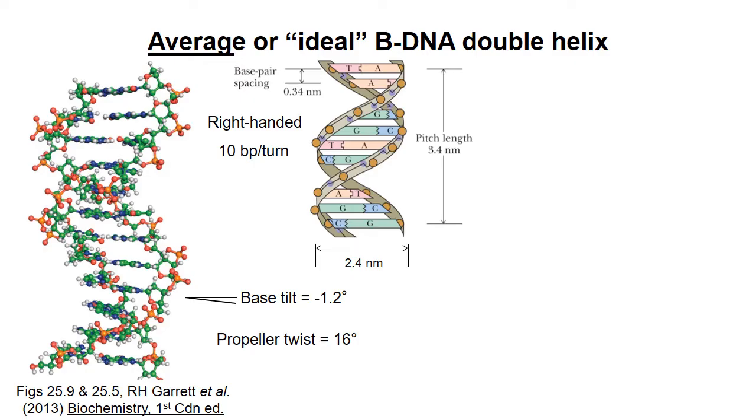The bases are not exactly perpendicular to the helical axis but have a slight tilt, 1.2 degrees on average, and there's an average propeller twist of 16 degrees. I'll describe what this means in a later video. You are responsible for knowing the facts in the red boxes.